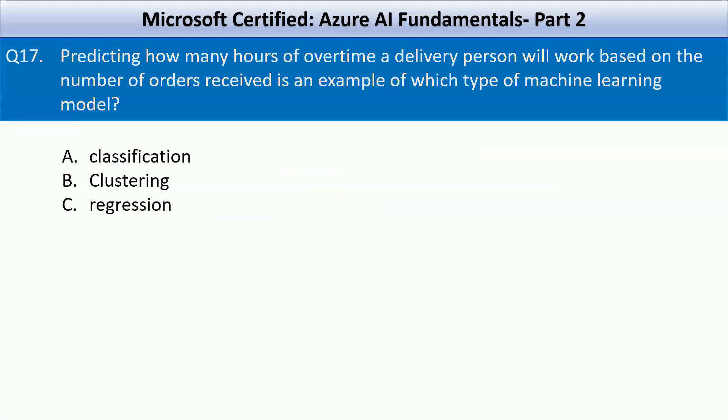Predicting how many hours of overtime a delivery person will work based on the number of orders received is an example of which type of machine learning model? Your options are classification, clustering, or regression.